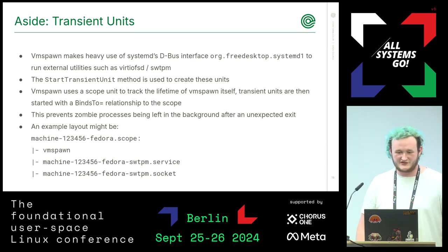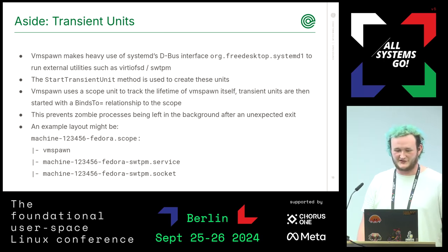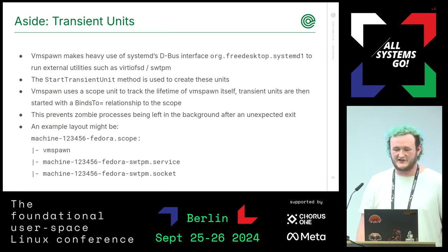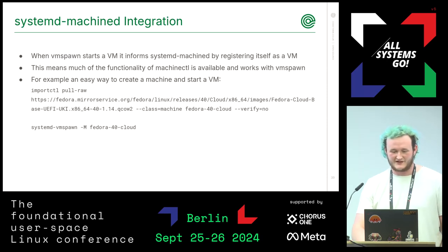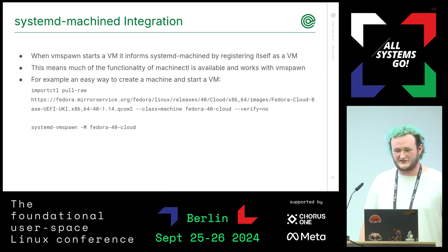As a brief aside, transient units enable a lot of the functionality in vmspawn. They're effectively a normal systemd unit, but their properties are supplied by a D-Bus call instead of via a unit file. Combined with scope units, they provide a simple way to ensure externally launched programs are already stopped when vmspawn finishes. Additionally, vmspawn offers integration with systemd-machined. When it starts a VM, it registers itself with machined, so machinectl knows about the VM and can perform actions on it.